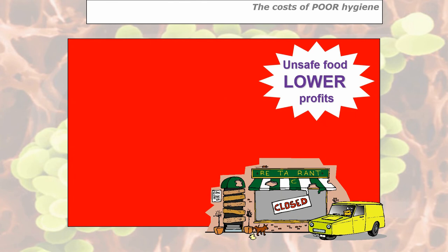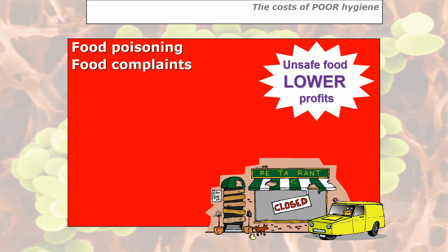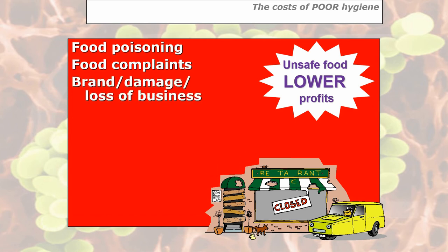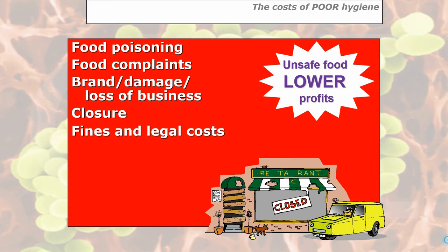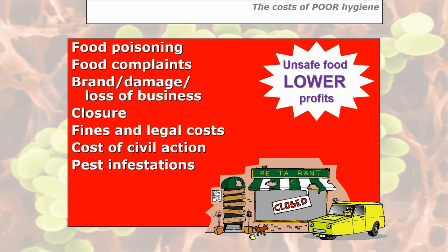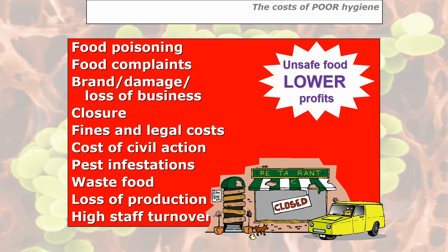On the flip side, the costs of poor food hygiene include unsafe food and lower profits, increased risk of food poisoning, food complaints from customers who won't return, brand damage, loss of business, closure, fines and legal costs which can run into millions of pounds, costs of civil action where someone sues for food poisoning losses, pest infestations from dirt and food debris, a lot of waste food, loss of production, high staff turnover, and low staff morale.